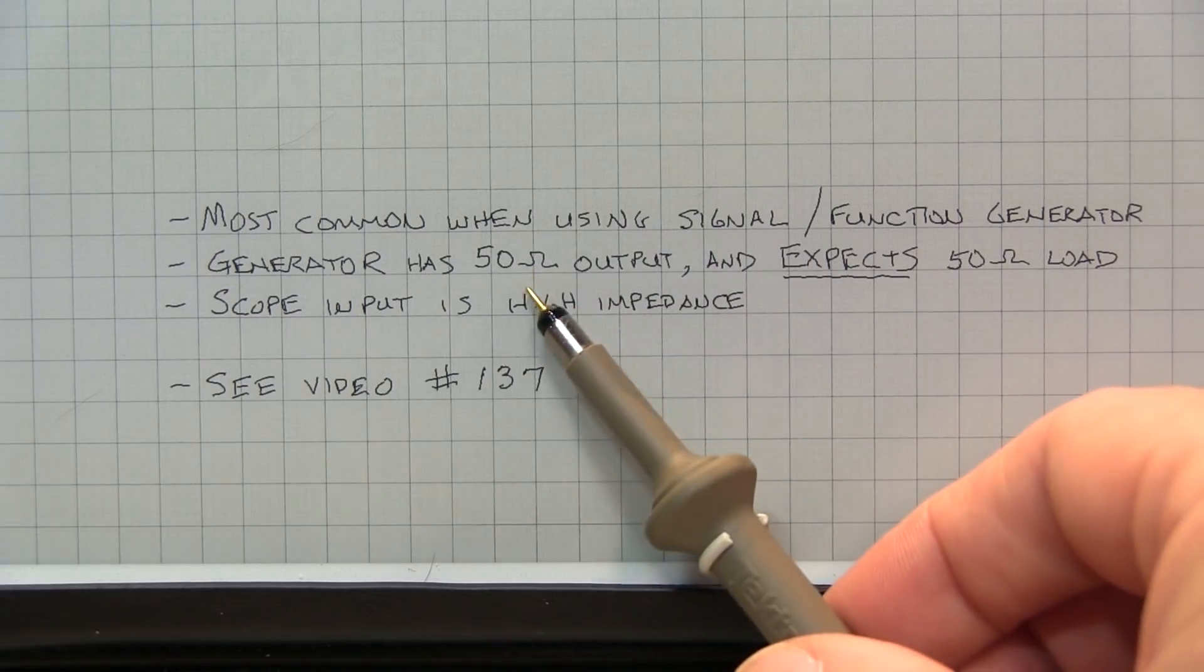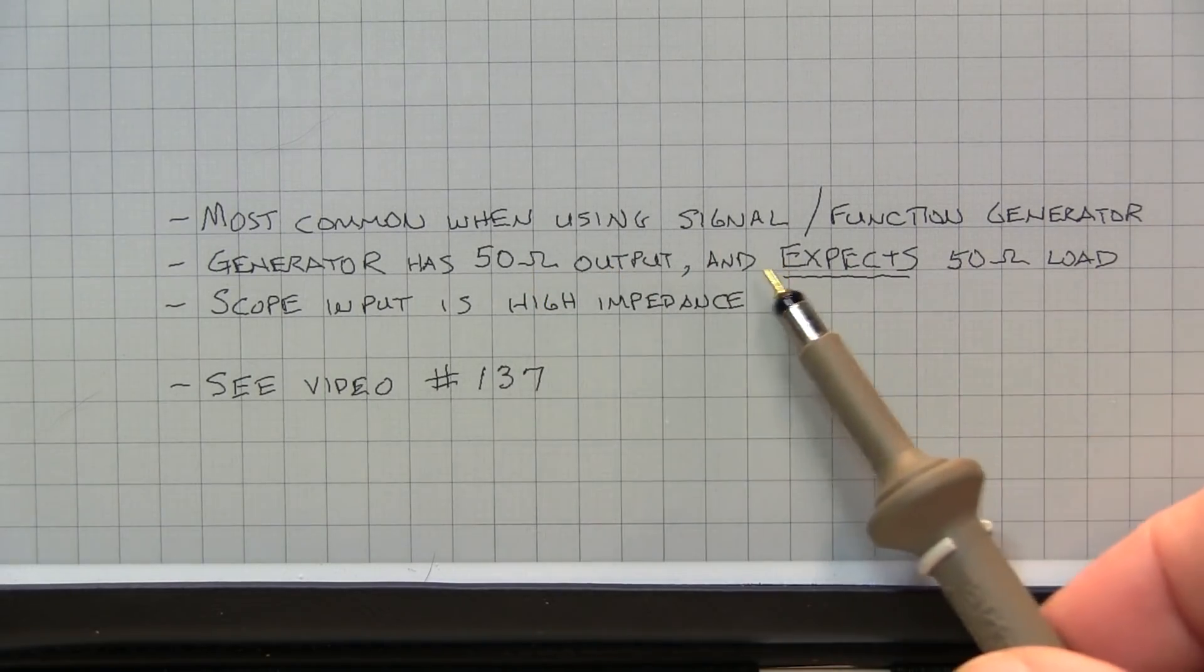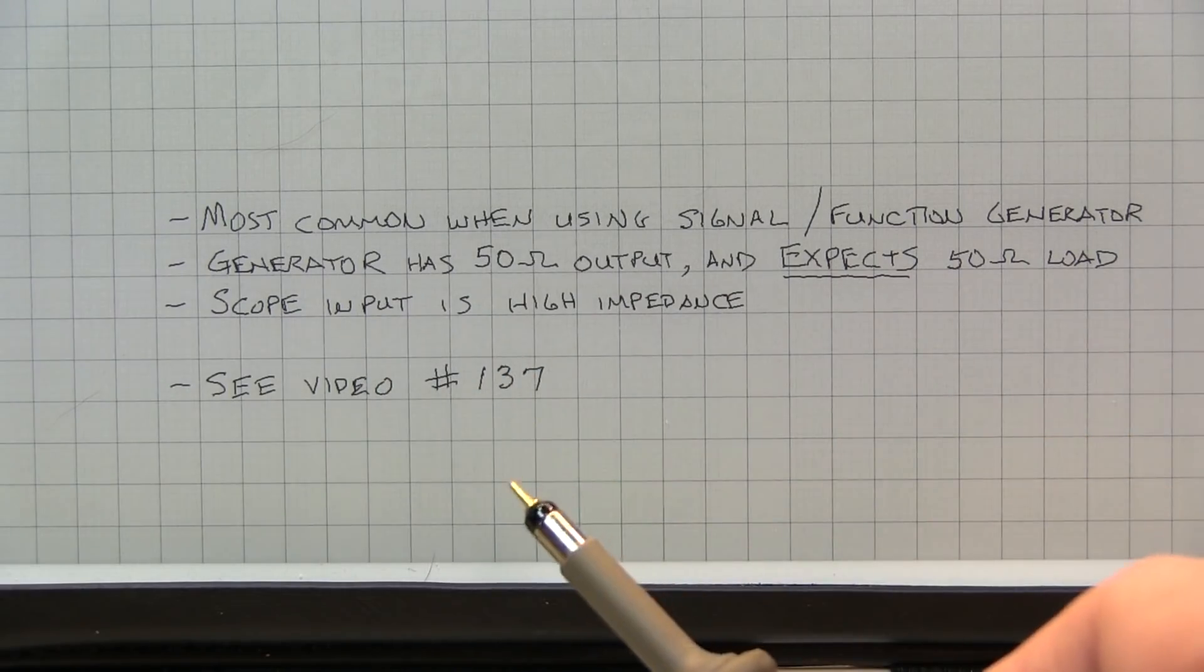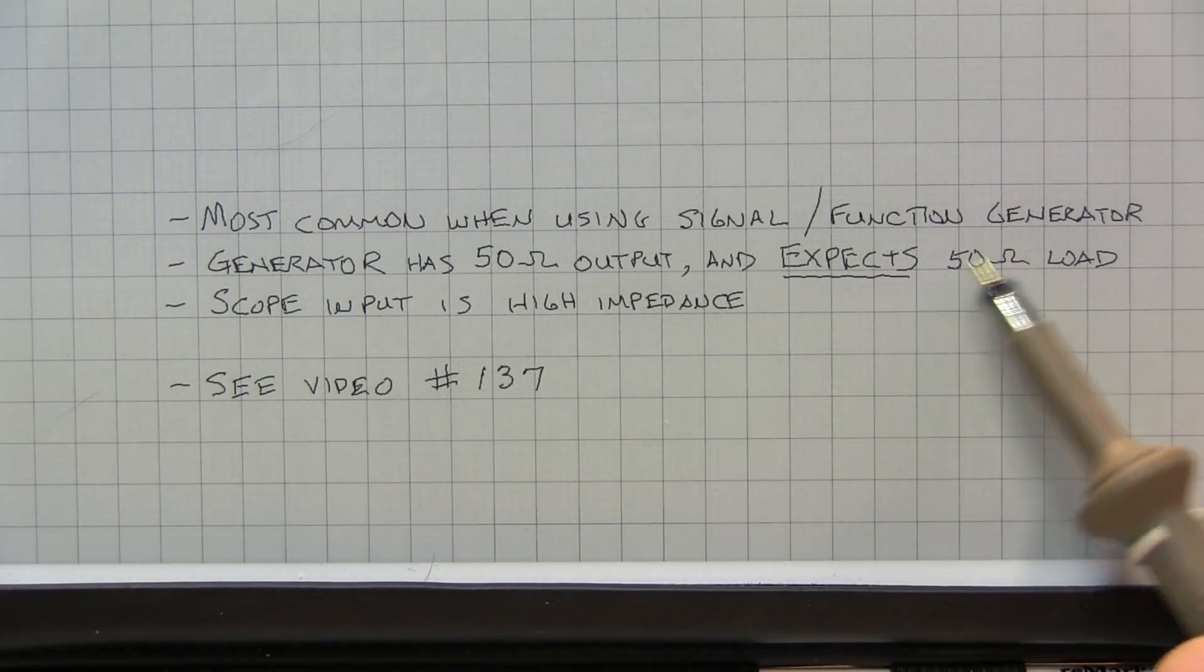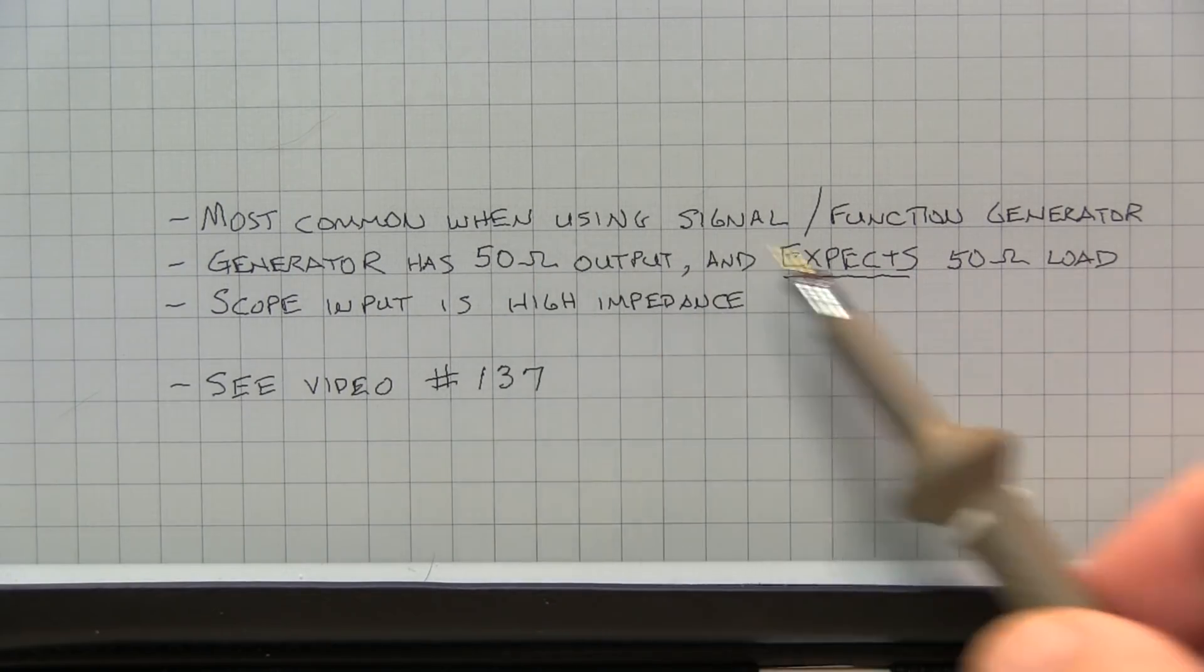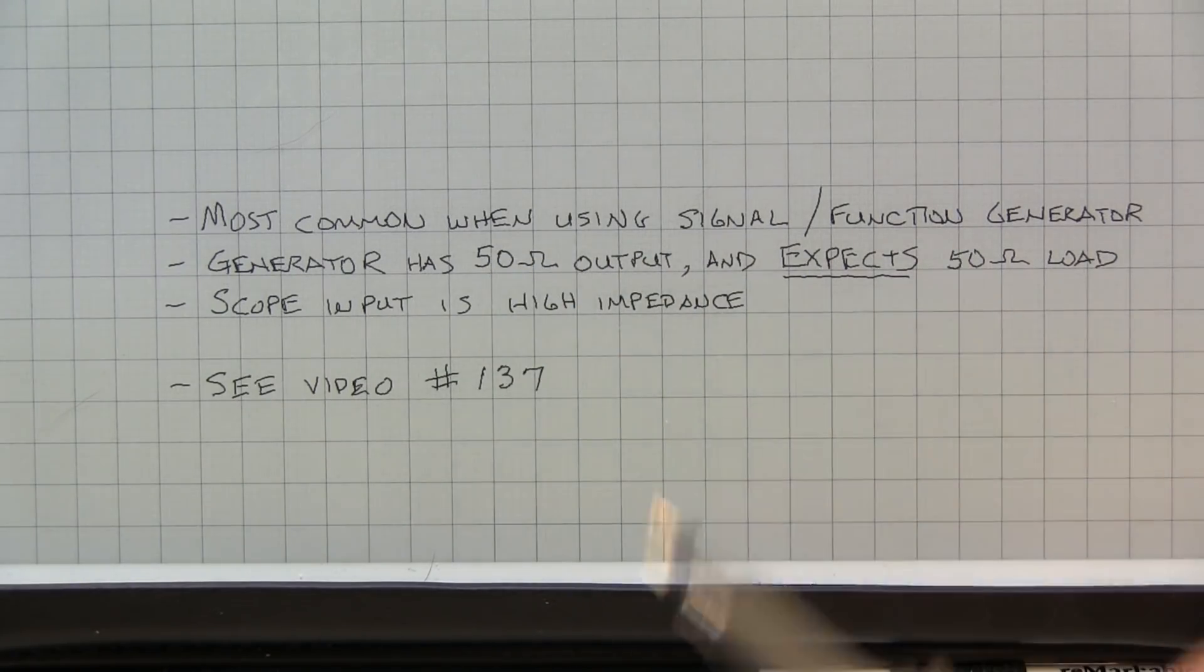And the reason is, the generator has a 50 ohm output impedance, and is expecting to see a 50 ohm load. But the scope is high impedance. So instead of seeing the 50 ohm load, you've got a high impedance load, and you don't get that voltage divider effect between the 50 ohm output impedance and the 50 ohm load. So the output is essentially double what you set it to.